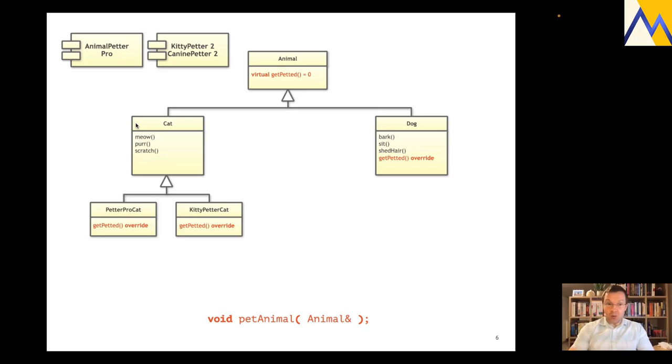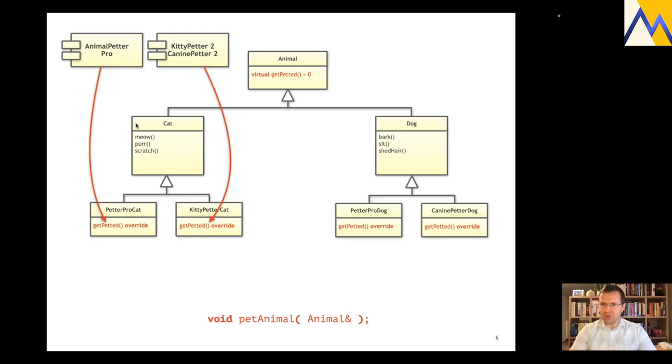So, we implement the PetterProCat and, of course, the KittyPetterCat. Because all of these classes, of course, can now use the individual libraries very easily. Cat doesn't have to deal with this anymore. All of the implementations are now just pushed downwards the inheritance hierarchy a little bit. And, of course, you'll realize this is so much better, so much more flexible. We can very easily now support other libraries as well. It works. And, of course, you can imagine that we do just the same for Dog. Now, poor Rover should also be petted in different ways. So, we now have the PetterProDog and the CaninePetterDog. And, of course, we use the according library to implement the getPetted function. Great. It works.